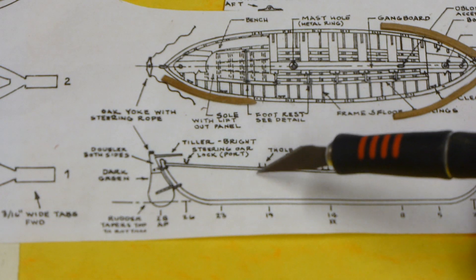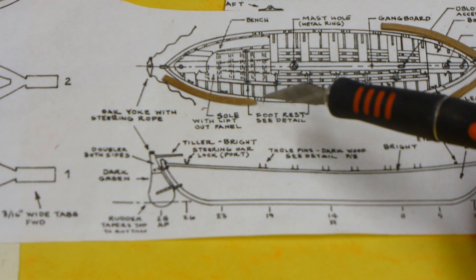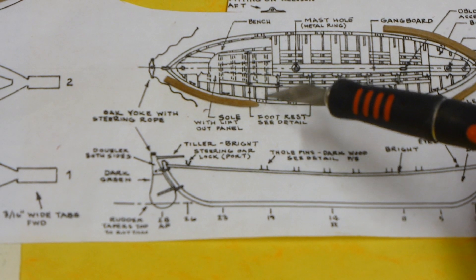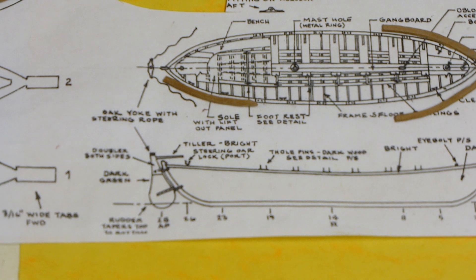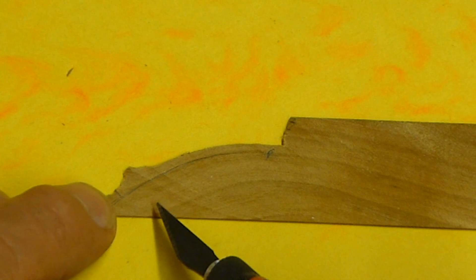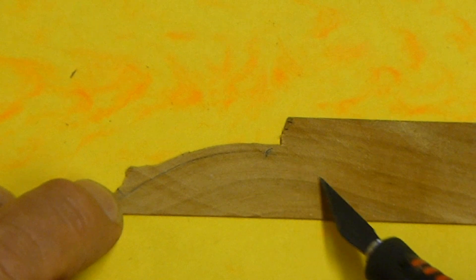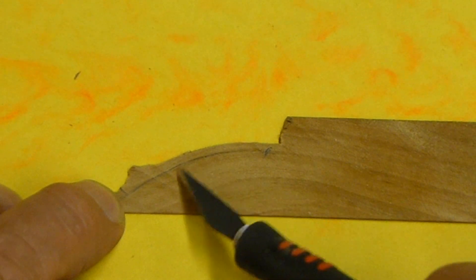Jumping ahead a little bit, the rail is made out of essentially six pieces. I positioned the joint right where the oar locks come together so that the seam would be covered with the oar lock.